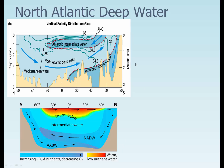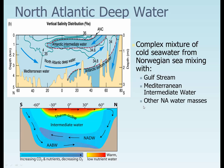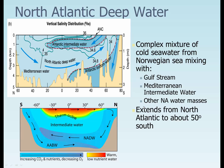The North Atlantic deep water — there's the Antarctic deep water, and this is the North Atlantic deep water. It's a complex mixture of water. It originates in the Norwegian Sea — the Nordic area — but it's also mixed with the Gulf Stream, as well as Mediterranean water, which tends to be warm but really salty, so it has a heavier density at the surface water. Other North American water masses are in there as well, and it extends from the North Atlantic to about 50 degrees south.